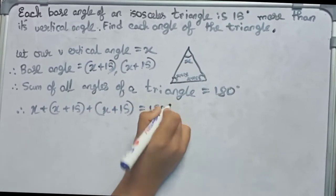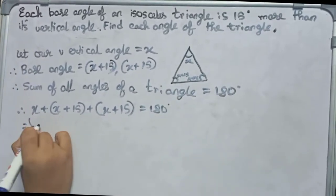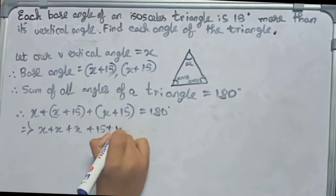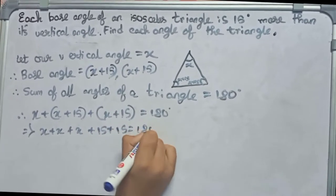So it becomes x plus x plus x plus 15 plus 15 equals to 180 degrees.